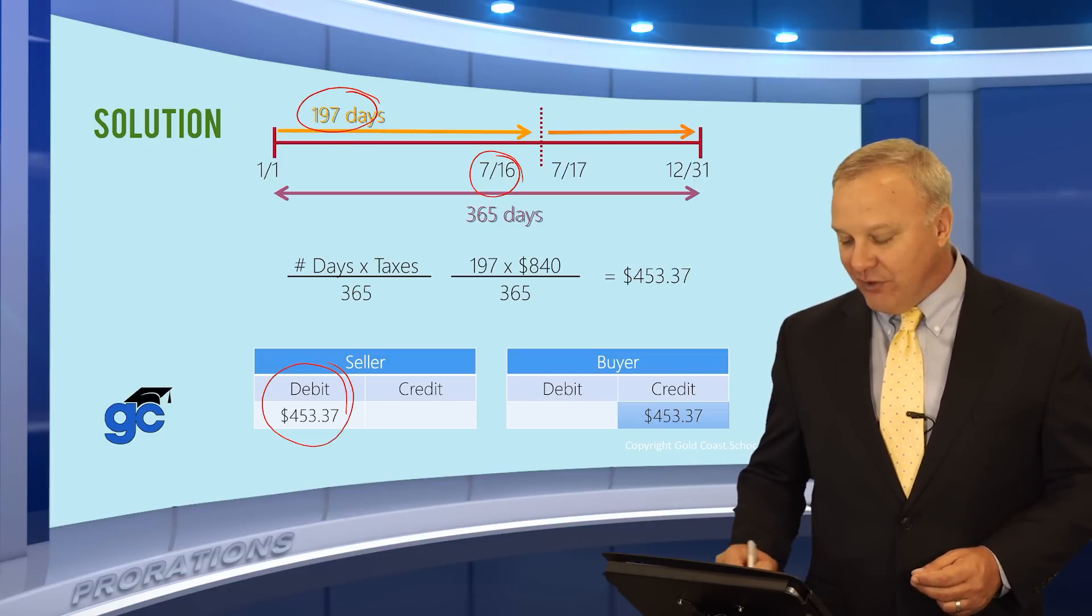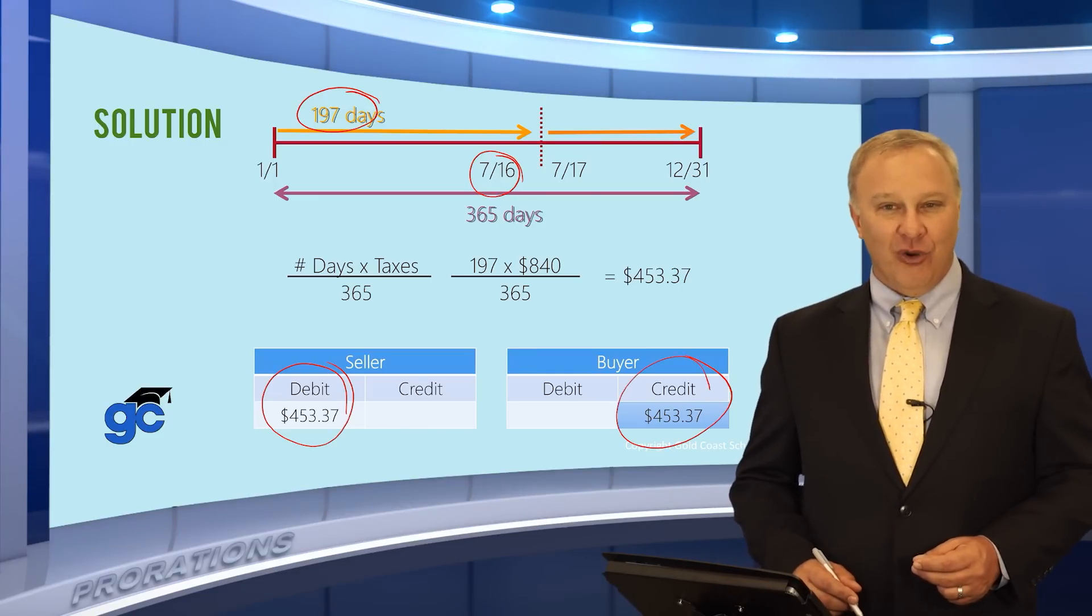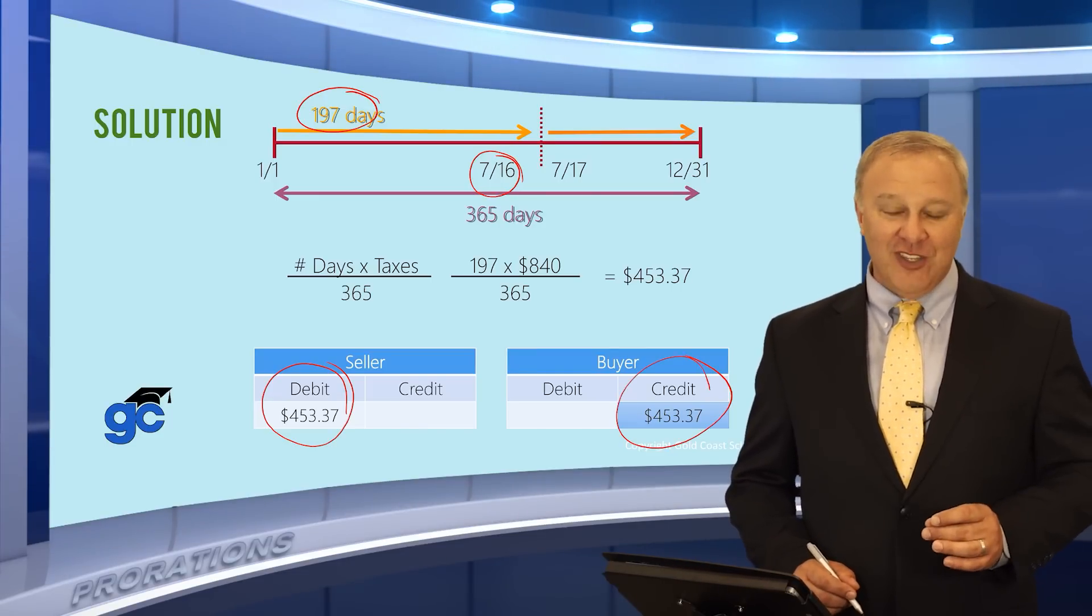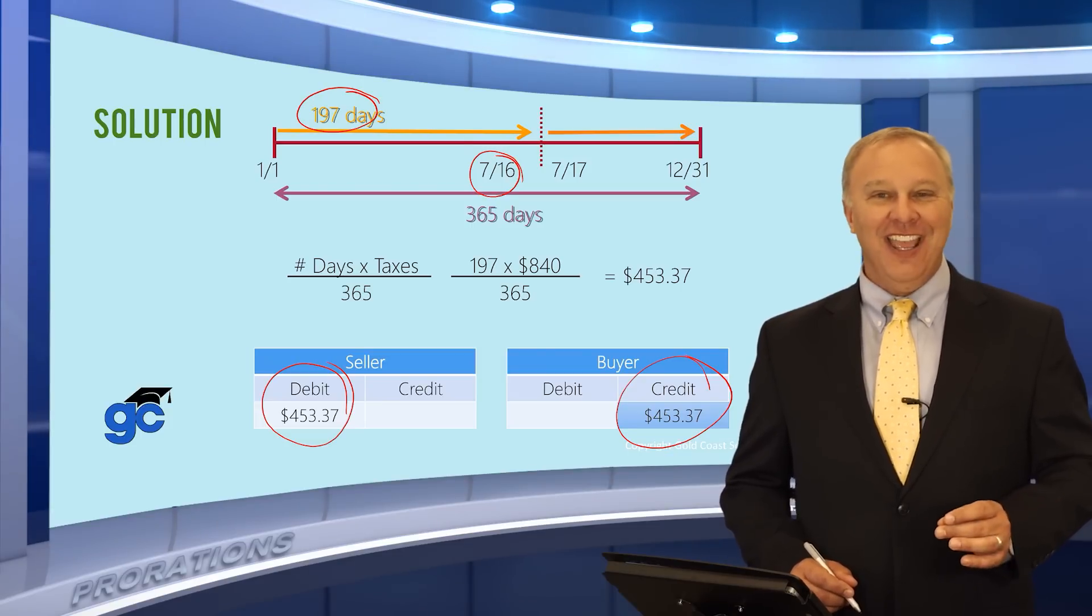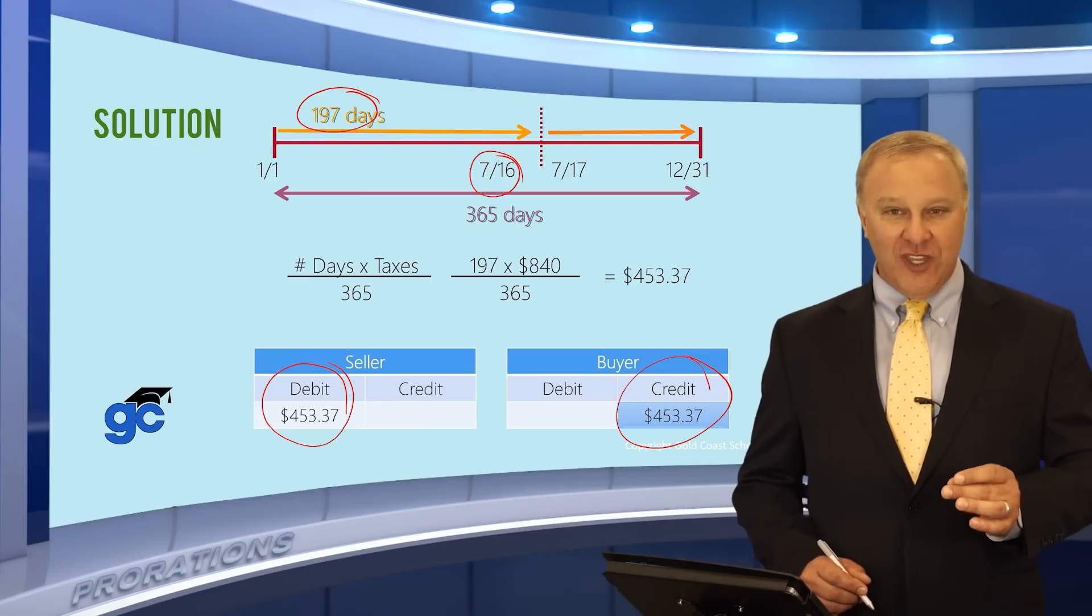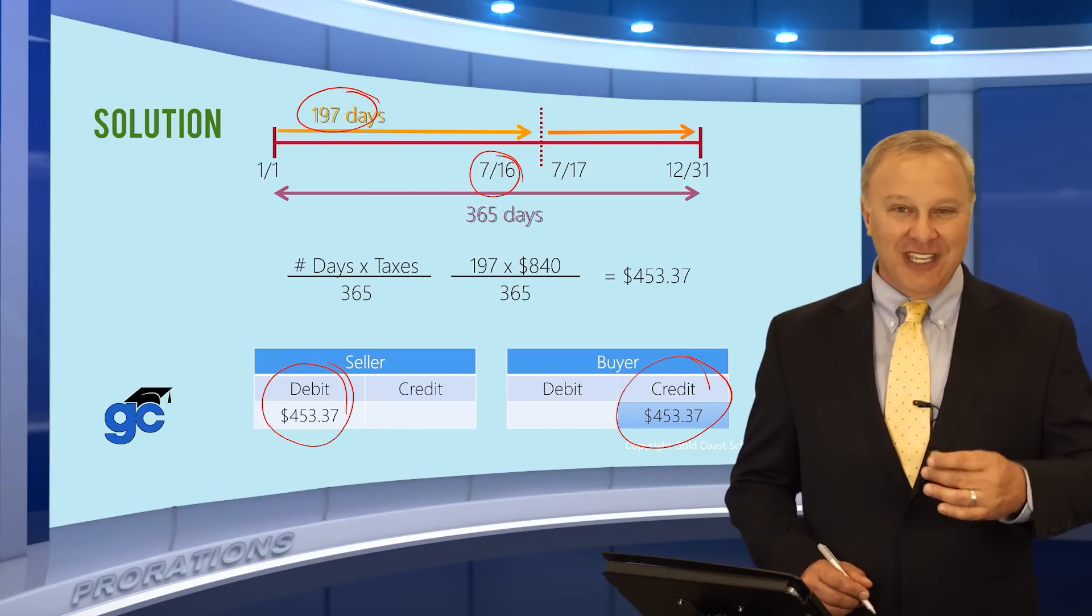So in this case, we're going to debit the seller $453.37 and credit the buyer the same amount $453.37. Just a word of caution on these on exams. Be careful of any answer where the numbers are different. Debits and credits must always equal. In other words, if I pay you $200, you receive $200.